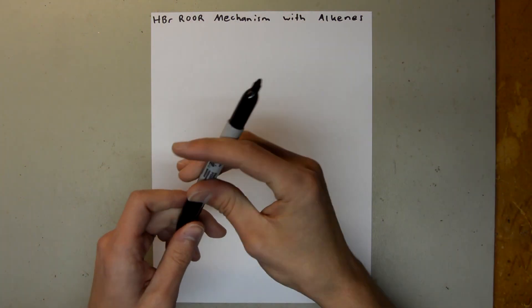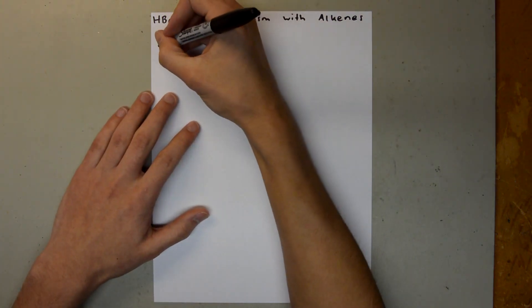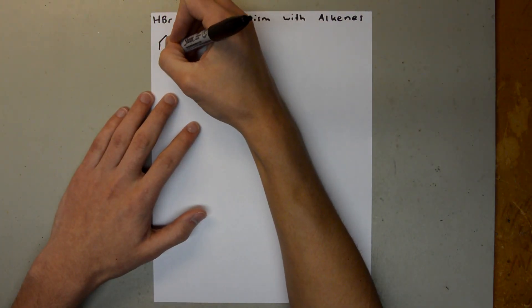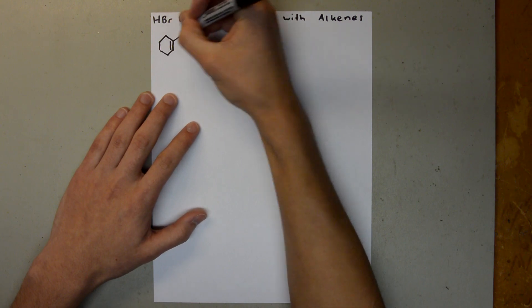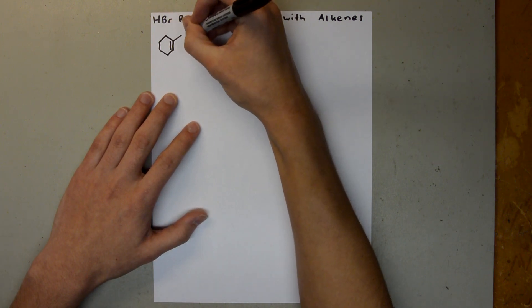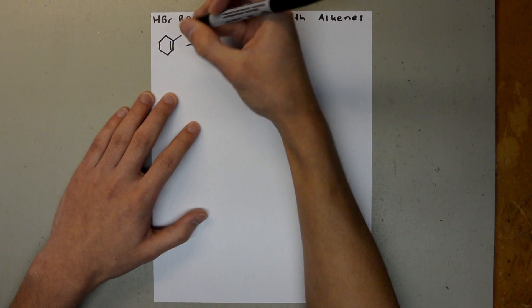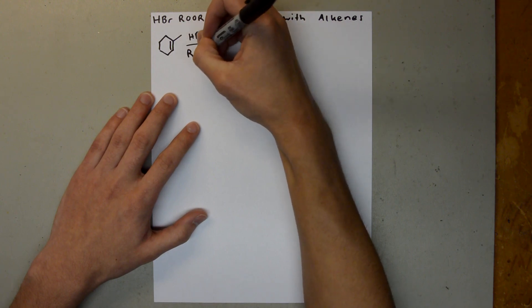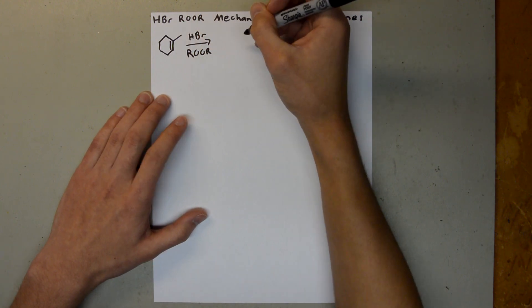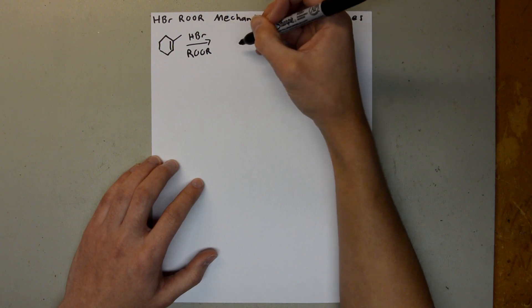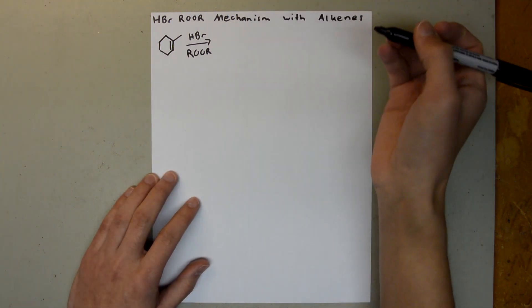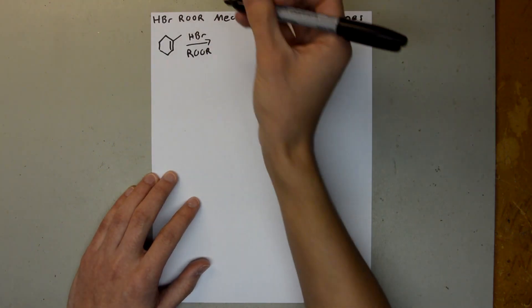So the reactant that I want to start with is this one. And then that's going to react with HBr and peroxide. And then by the end of this mechanism, we will know what the product or products are. So this mechanism starts with the breaking of the peroxide.